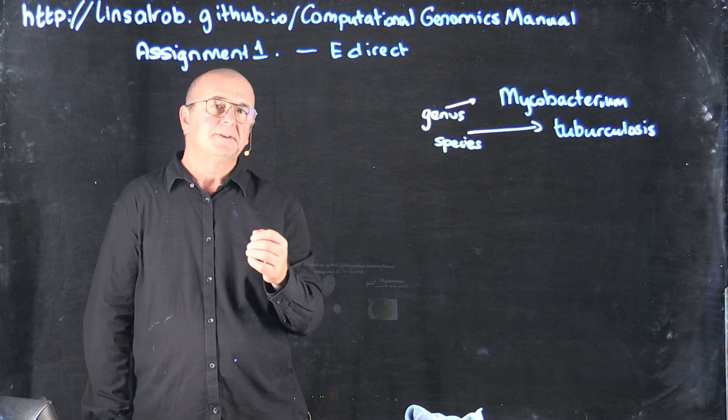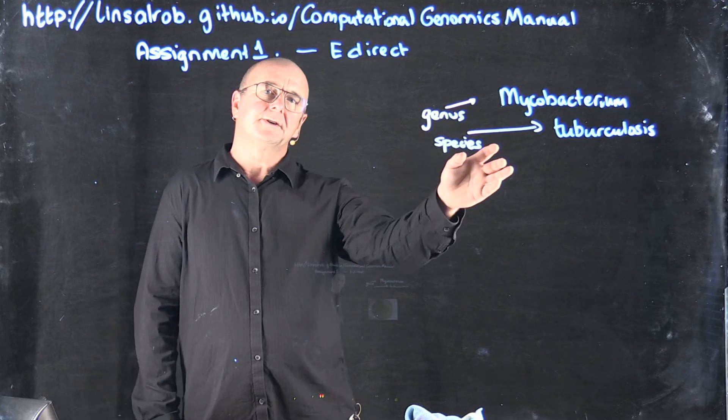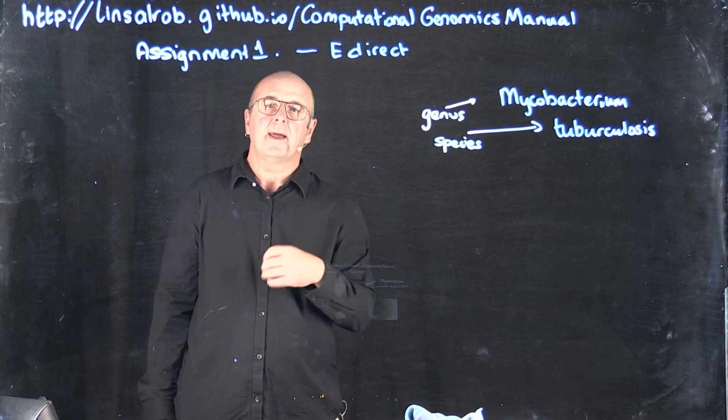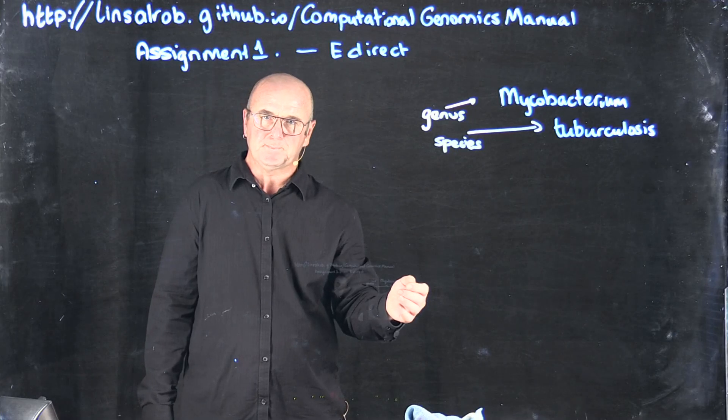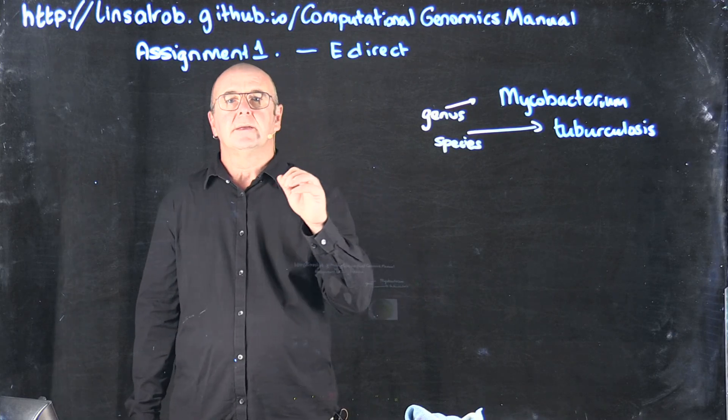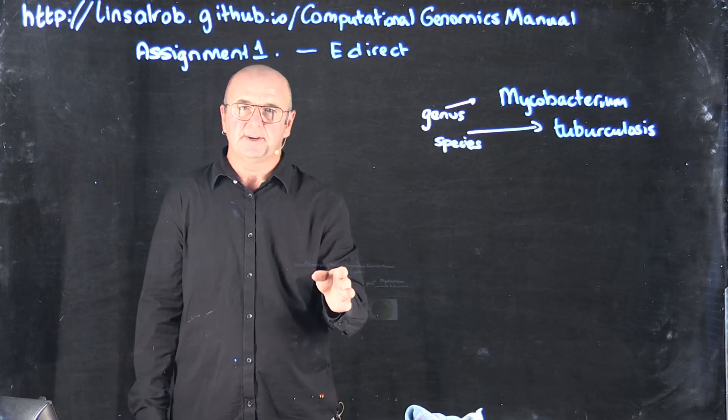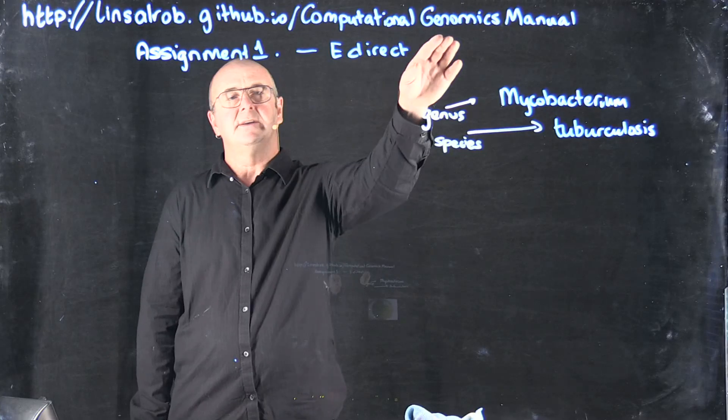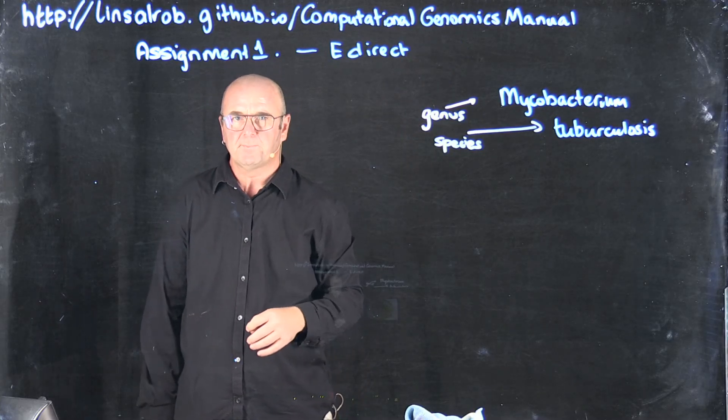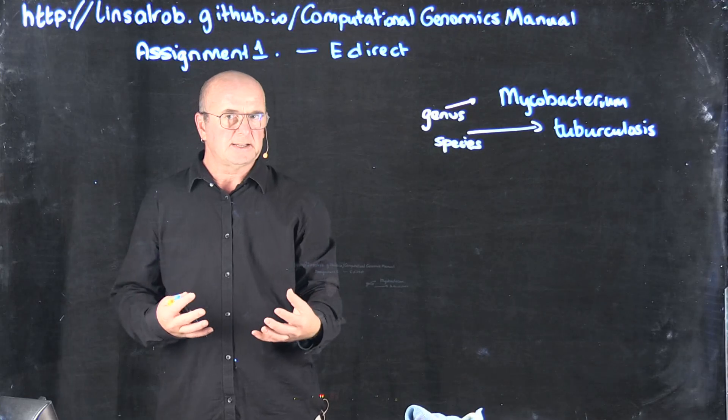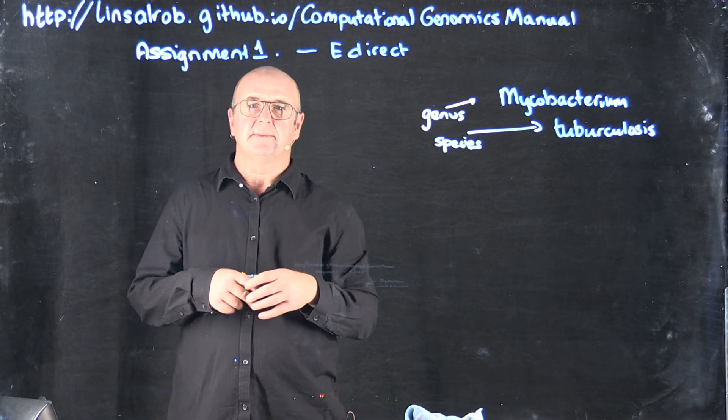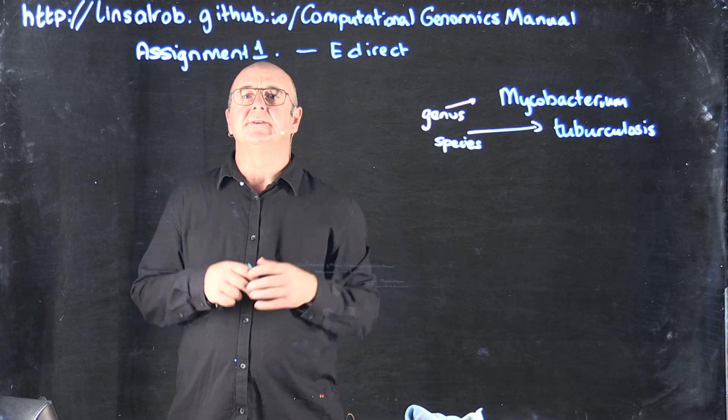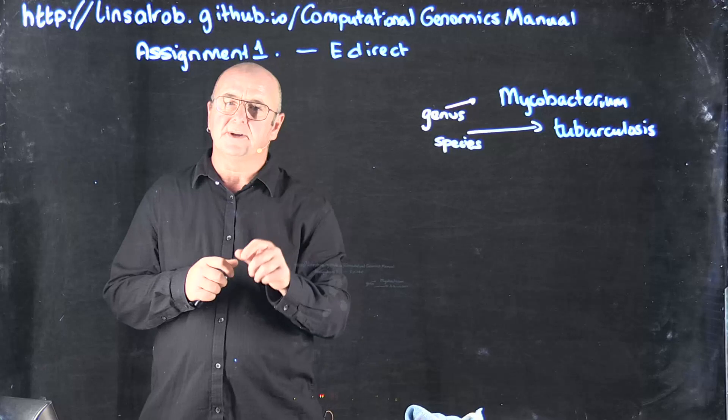The assignment is to use eDirect to figure out which of those bacteria has the most number of genomes associated with it and how many genomes there are. All of the details on how to do that have been covered in the eDirect video and are also covered in the eDirect chapter in the Computational Genomics Manual. You may need to add some of your new Linux skills, maybe a little bit of bash scripting, to go through that file one at a time so that you don't end up doing it manually.